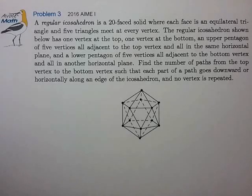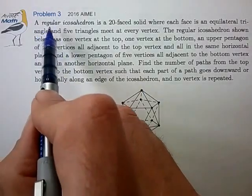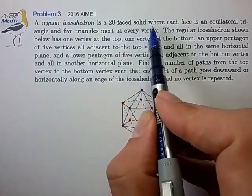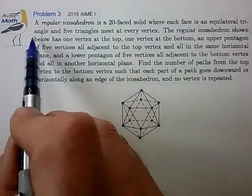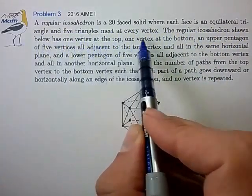Hi, this is problem 3 from the 2016 AIME. A regular icosahedron is a 20-faced solid where each face is an equilateral triangle and five triangles meet at each vertex.